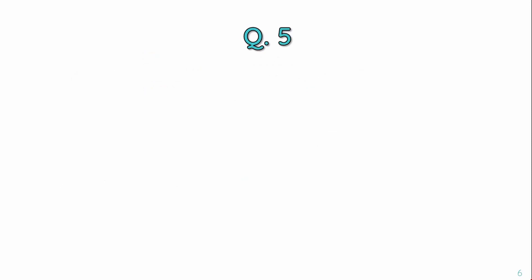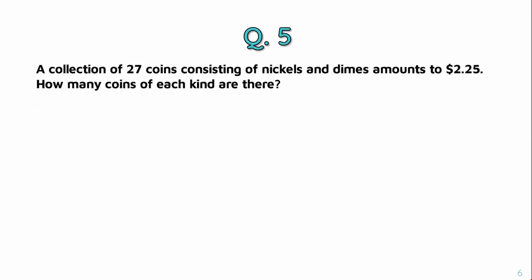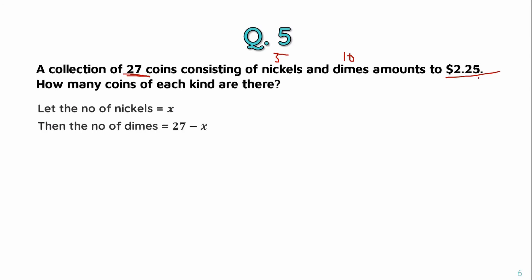Question number 5: a collection of 27 coins consisting of nickels and dimes amounts to $2.25. How many coins of each kind are there? The total number of coins is 27. Nickels are worth 5 cents and dimes are worth 10 cents. Let the number of nickels be x, so the number of dimes is 27 minus x.